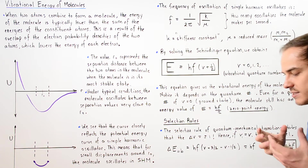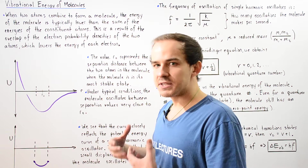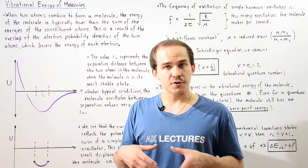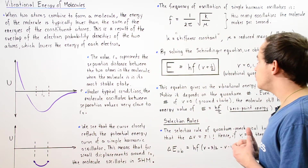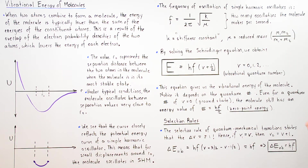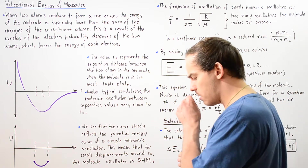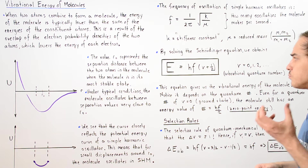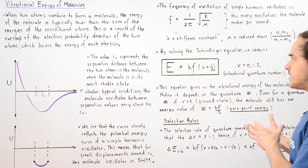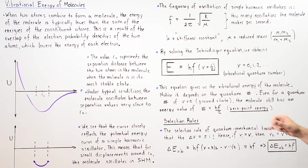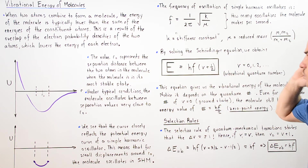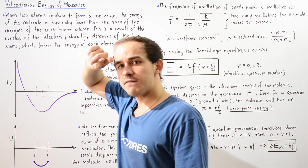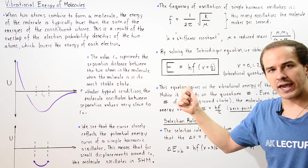In the same way that when we discussed finite potential wells we used Schrödinger's equation to solve for energy, we can also use Schrödinger's equation to obtain the energy of vibration. We're not going to go through the specifics of solving it — we'll simply show the end result. The vibrational energy of our molecule is given by the following equation.